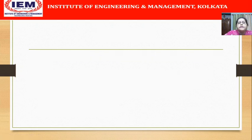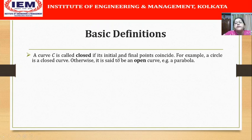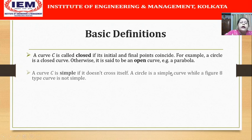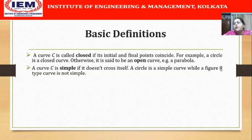Now first let us see some basic definitions. A curve C is called closed if its initial and final points coincide — a very common example is a circle. However, it will be open if the initial and the final points differ or do not coincide, for example a parabola. A curve C is said to be simple if it does not cross itself. Again, a circle is a simple curve, while a figure-8 type curve is not simple as it crosses itself.